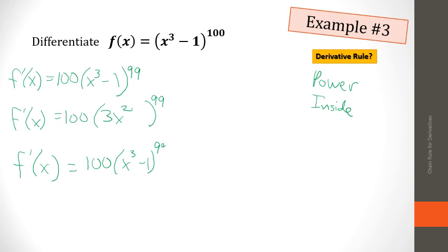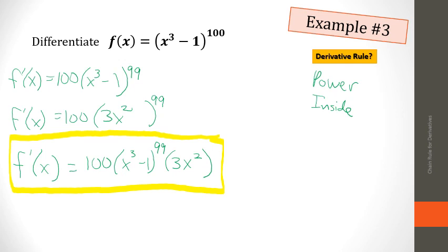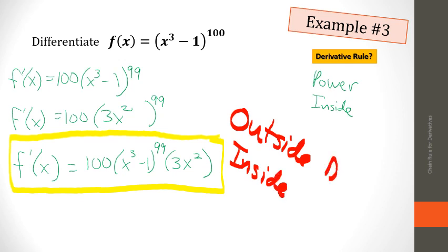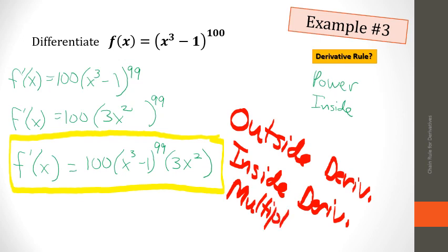The new power is 99 and then we have the derivative of the inside. It turns out the right answer is the last one — when you're finding the derivative of a composition of functions, you go outside in. You take the outside derivative, then the inside derivative, and you multiply them. That's how you do it. Now we're going to look at some examples.